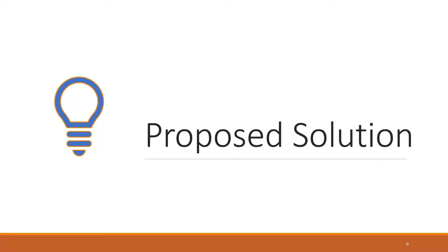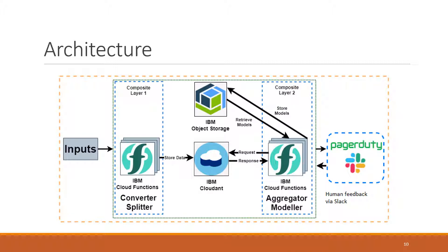Now let's discuss the architecture of our solution. We designed a layered microservices-based architecture that constructs a scalable and reliable data collection pipeline. The pipeline can collect or pull data from various sources like message queues and databases. Our solution has two composite layers: converter and splitter, and aggregator and modeler, for processing online and offline data. This architecture allows us to use microservices and pub-sub architecture patterns, offering a good balance between scalability and maintainability due to high cohesion and low coupling. Asynchronous communication between layers makes this a building block for processing any types of streaming data.